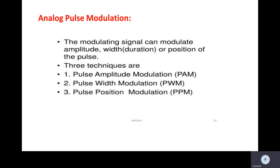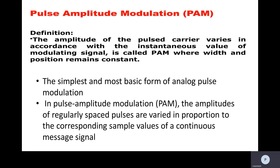That's why we call it pulse modulation. Analog pulse modulation is classified into three types: pulse amplitude modulation, pulse width modulation, and pulse position modulation. The first one is pulse amplitude modulation. The process of changing the characteristics of a carrier signal in accordance with the baseband signal — here, the amplitude of a pulsed carrier changes in accordance with the instantaneous values of the baseband or modulating signal — is known as PAM.